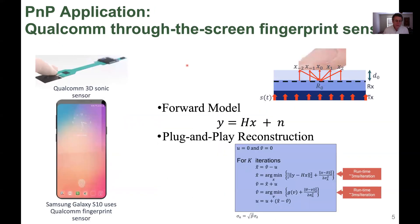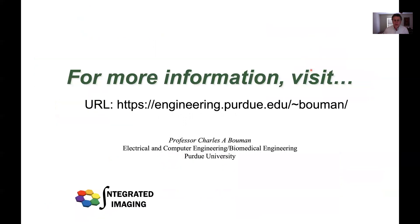Another notable application of plug and play is the Samsung Galaxy line of phones, in which they use a through-the-screen sensor for fingerprint detection. This feature actually uses a plug and play method to do a reconstruction of the fingerprint so you can get accurate fingerprint detection.